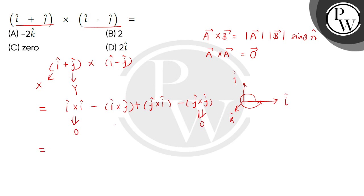Then we get the second term: i cross j. Moving anticlockwise, we get k cap, so this is minus k cap.